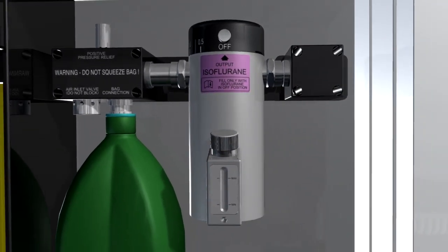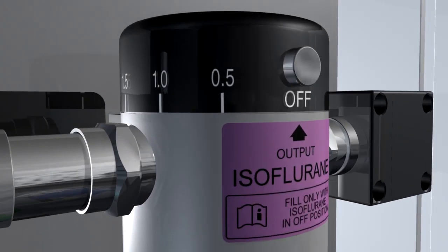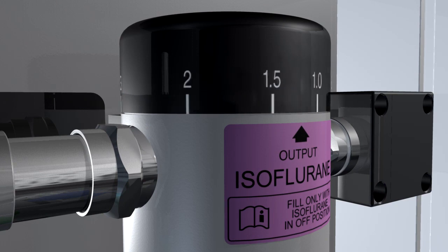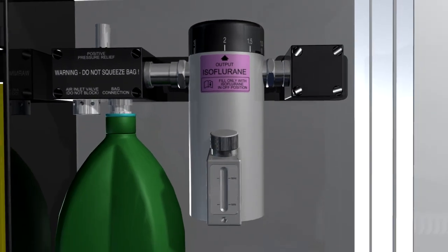The low resistance draw over vaporizer adds a volatile agent to the carrier gas passing through it. The volatile agent is added by using the selector wheel to achieve the desired percentage. We now have anesthetic gas comprising oxygen, volatile agent, and a variable amount of room air.